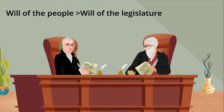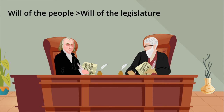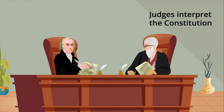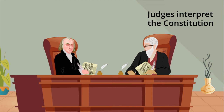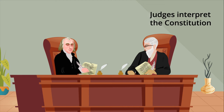Hamilton wrote that through the power of Judicial Review, the Supreme Court can ensure that the will of the people, which is represented through the Constitution, is supreme over the will of the legislator, which might represent only a portion of the people. Madison added that the interpretation of the Constitution should be decided by judges, not through the legislator.